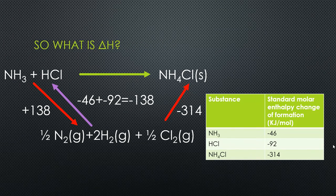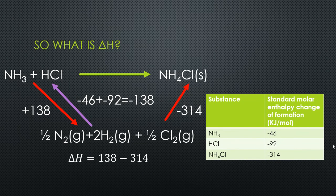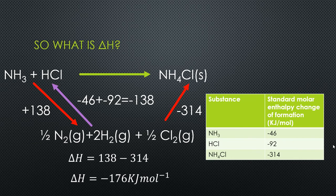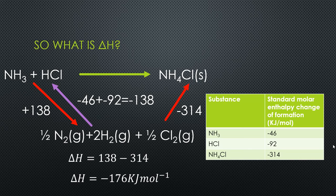So the question now is, what is the enthalpy change? We learned that it doesn't matter what route you take as long as you start and finish in the same place and your route is valid. What we can simply do is say that the enthalpy change is 138 minus 314. We're combining those two, and we get minus 176 kilojoules per mole. That is our final answer.